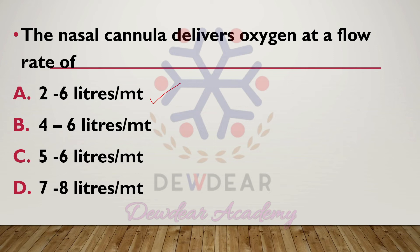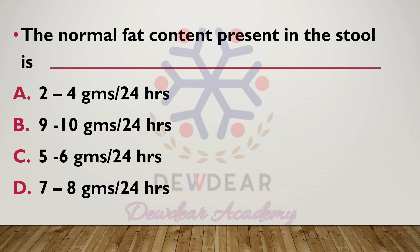The normal fat content present in the stool is: options two to four grams per 24 hours, nine to ten grams per 24 hours, five to six grams per 24 hours, seven to eight grams per 24 hours. The correct answer is option A — two to four grams per 24 hours.